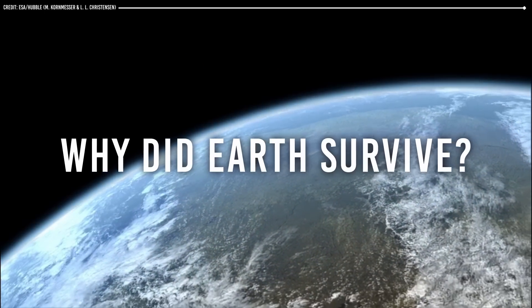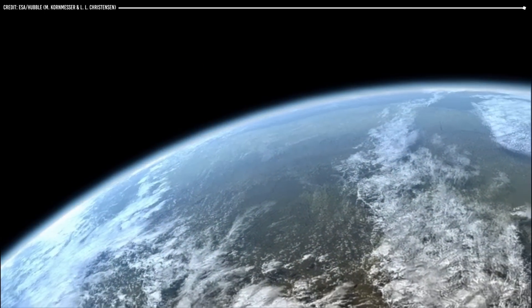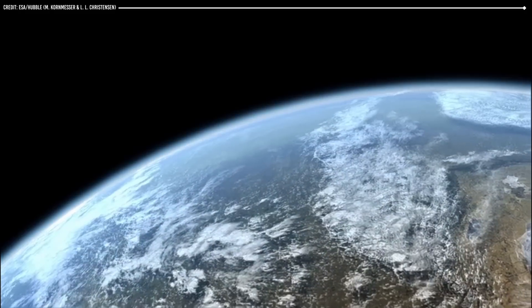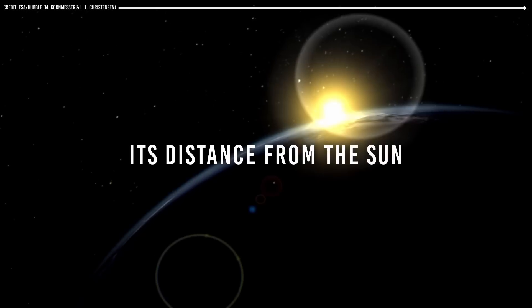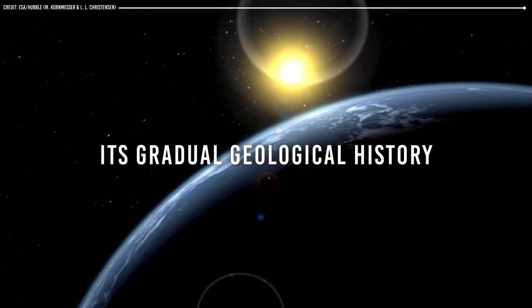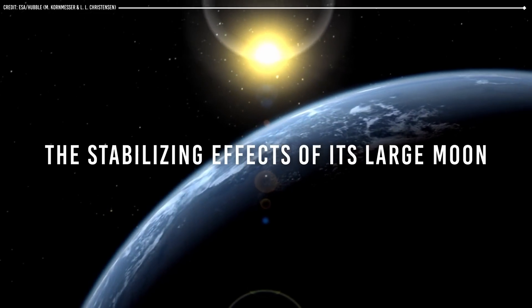Why did Earth survive? Earth's ability to support life is due to several factors that have allowed it to maintain a stable environment over billions of years. These factors include its distance from the sun, its atmosphere, its gradual geological history, and the stabilizing effects of its large moon.